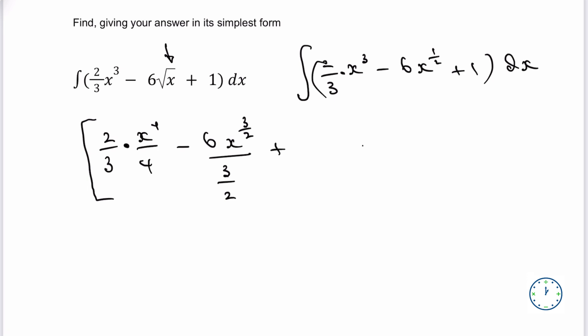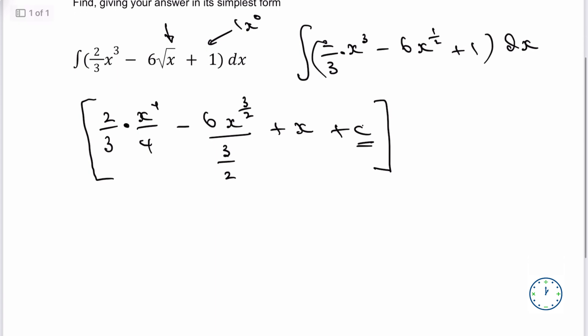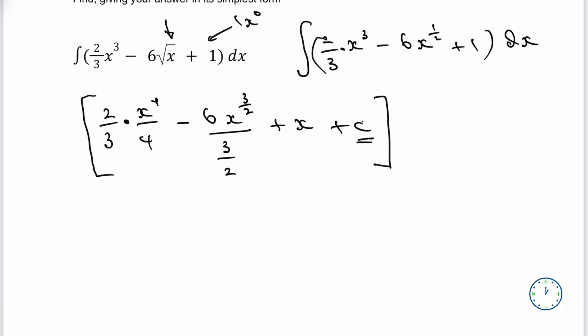Now, with 1, that's exactly the same as saying 1x to the power of 0, because anything to the power of 0 is 1. So that's just basically 1. I add 1 to the index so it becomes x to the power of 1. The other thing to be aware of with integration is there's also a constant, and you will lose marks if you don't add it at the end. In this particular case there's no way of us working it out, but it still exists and it's just good practice. Then it's a case of putting this in a slightly easier form.